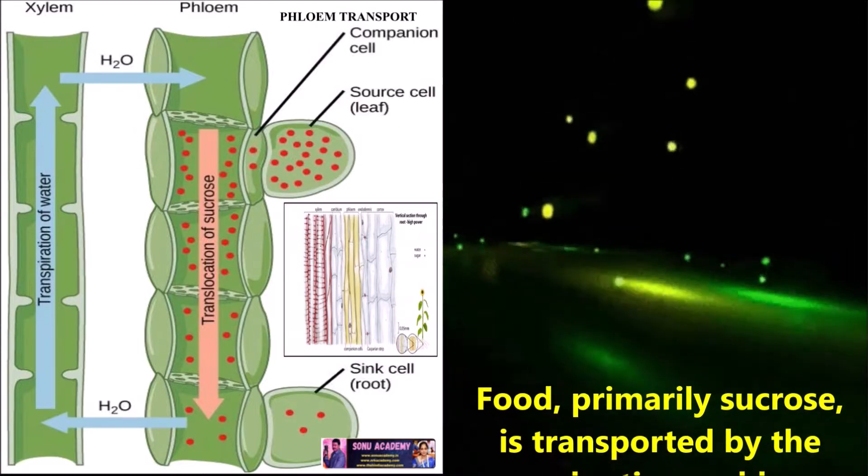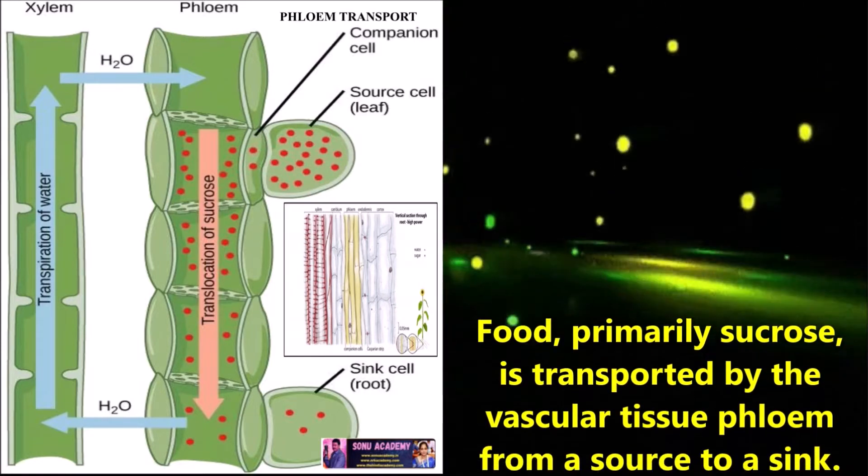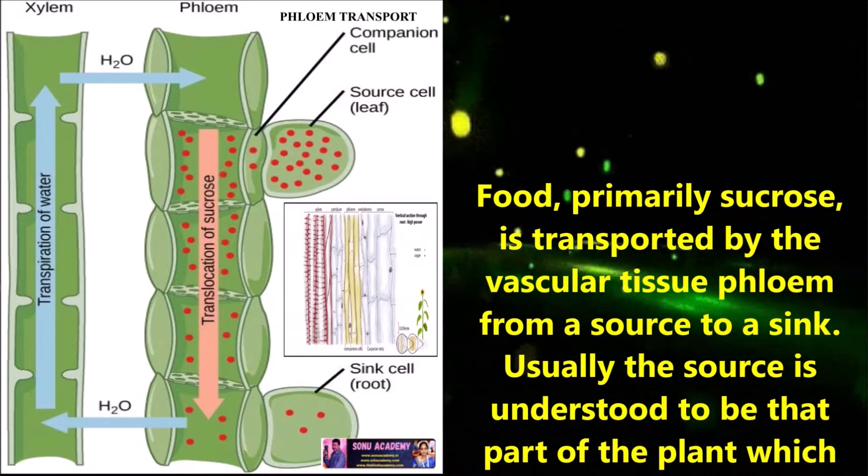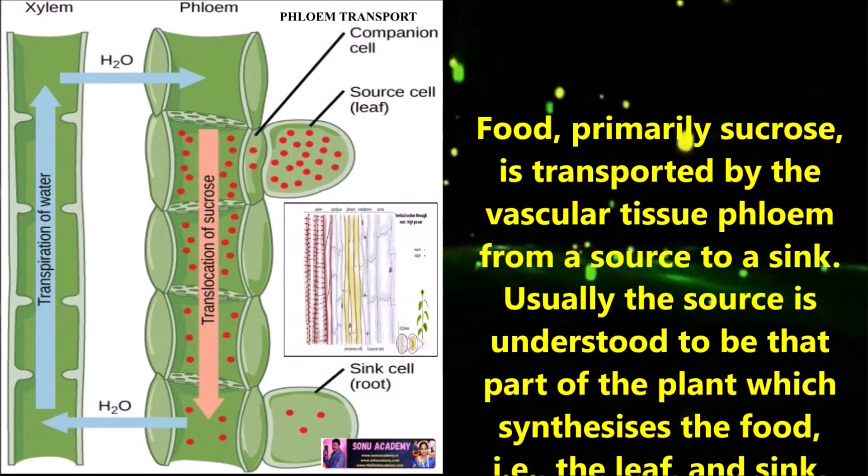Children, let us see the flow of transport from source to sink. Food, primarily sucrose, is transported by the vascular tissue phloem from a source to a sink.